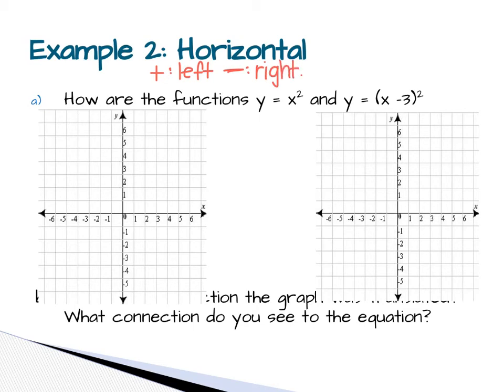So a, I went from x squared, which is going to be the parabola, to x minus 3 squared, which means my vertex of my parabola is going to move right 3. And then I draw my u.